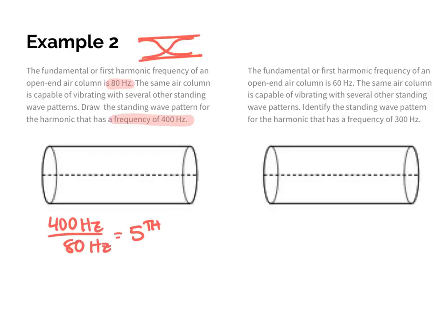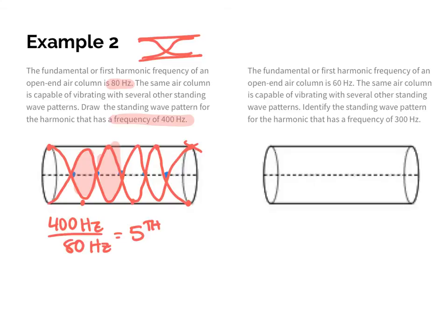Drawing the fifth harmonic: antinodes at either end, five nodes inside, and antinodes between every node. Starting from the antinode at the open end, I fluctuate up and down through the nodes. Counting the loops: one, two, three, four loops, and then two half loops at either end — that's the fifth harmonic.